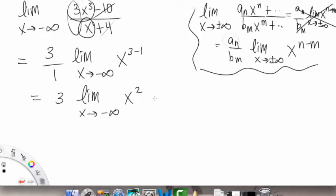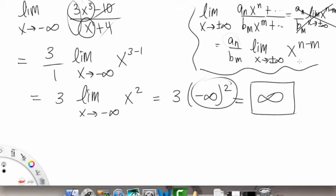Okay? So when we plug that in, we get 3 times negative infinity squared. And when you have the negative squared, then that goes away. So it becomes positive, a positive infinity to be precise. Okay? Or that's actually pretty imprecise. But anyways, so infinity is our answer.